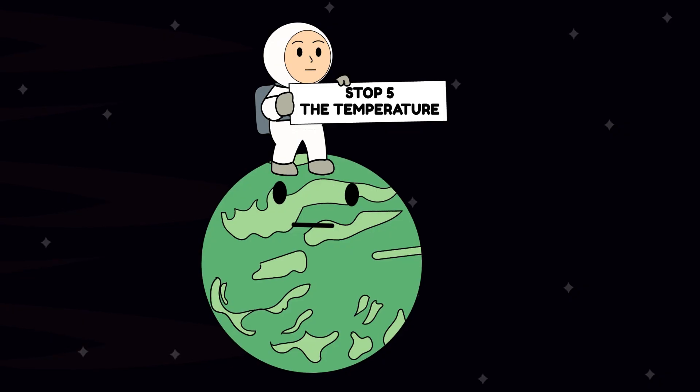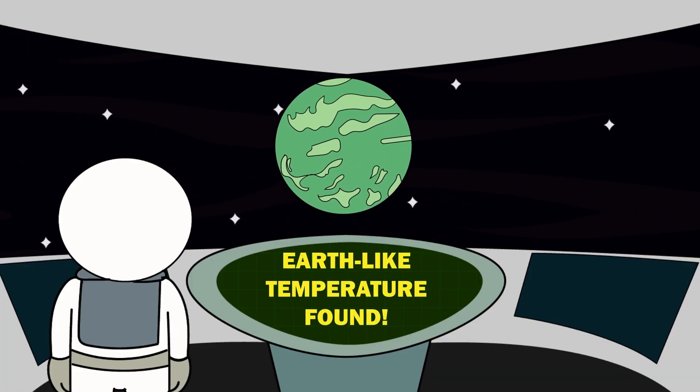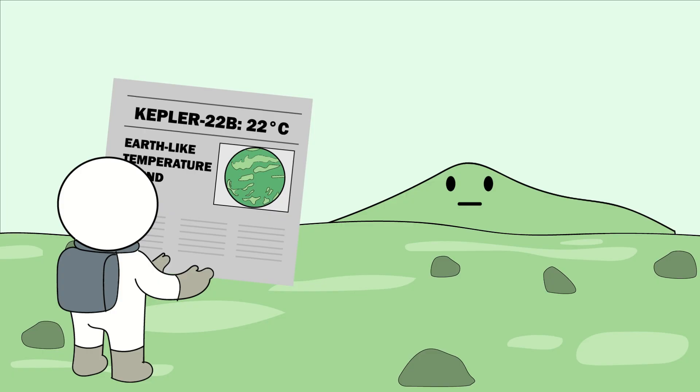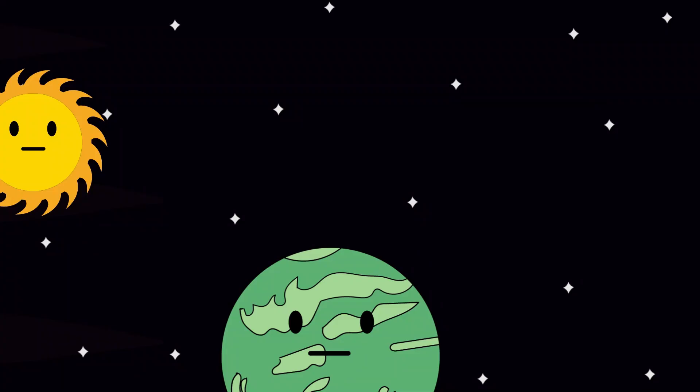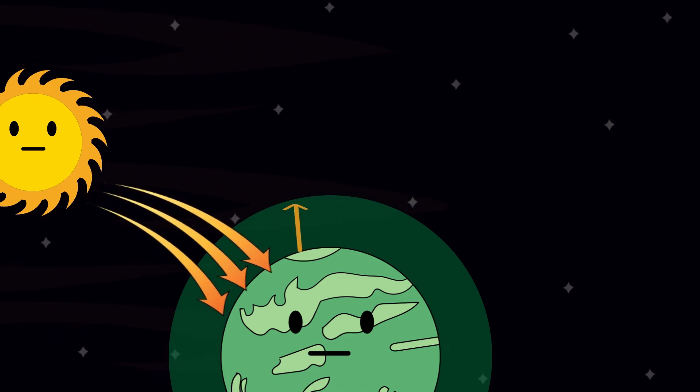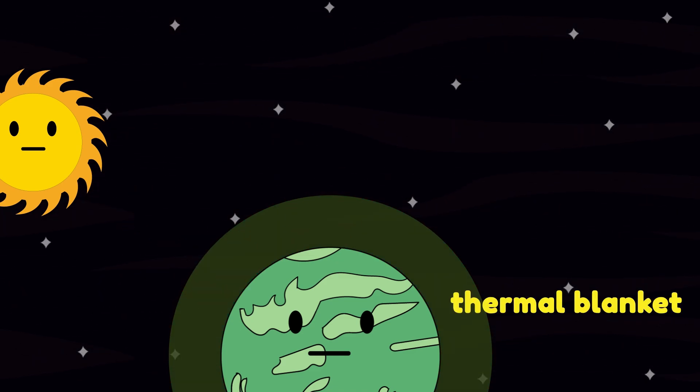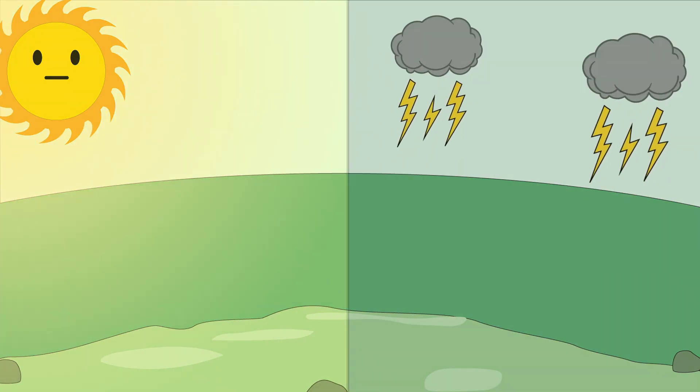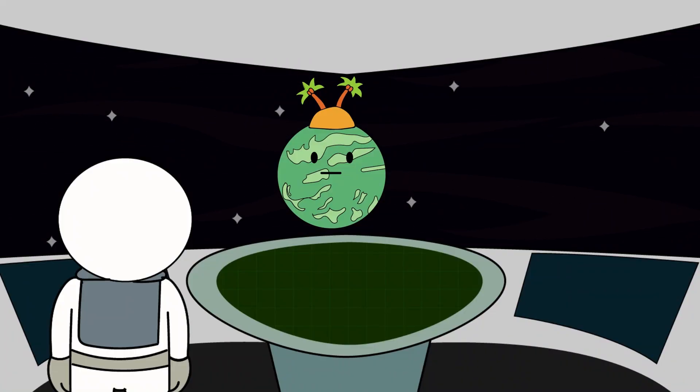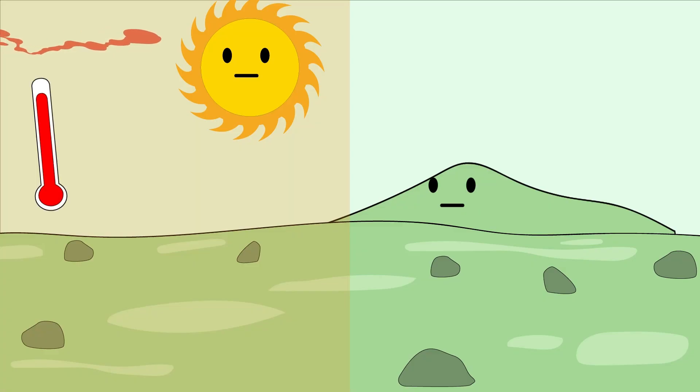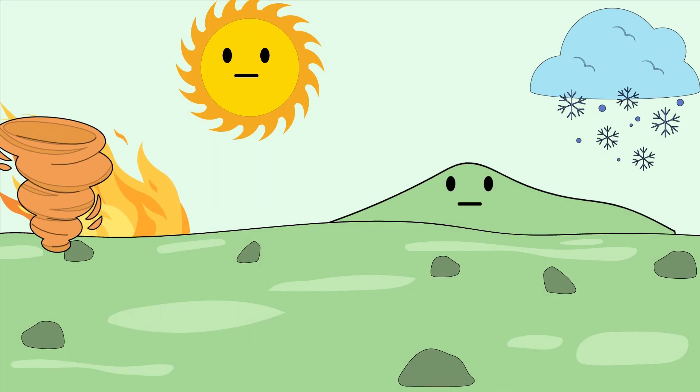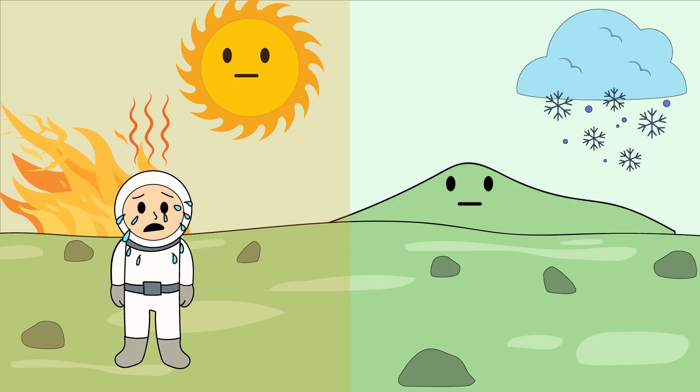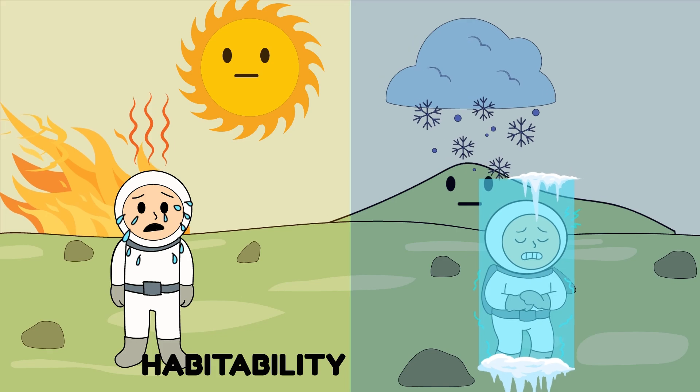Now, for the statistic everyone loves to quote. On paper, Kepler-22b's equilibrium temperature sits at around 22 degrees Celsius. Room temperature. The kind that makes headlines and fuels hope. It's also completely misleading. If the atmosphere is as thick as we suspect, heat gets trapped efficiently, wrapping the planet in a thermal blanket that steadily raises surface temperatures. Water evaporates. Greenhouse effects spiral. And the climate becomes wildly unstable. You don't get a paradise. You get exoplanet Venus: scorching heat during the day, brutal cold if atmospheric circulation fails at night, and violent storms as the planet desperately tries to move heat around. Kepler-22b can't decide whether to cook you or freeze you. So it compromises. Badly.